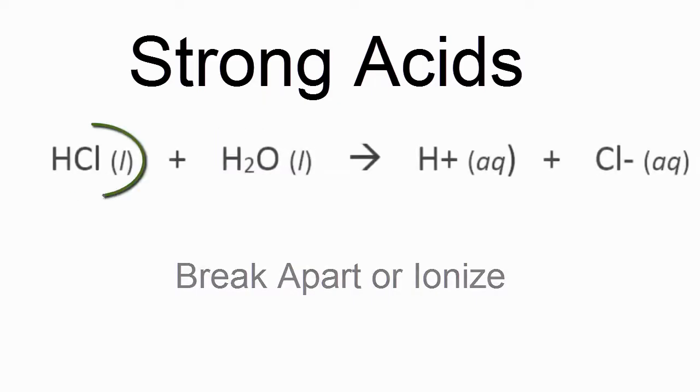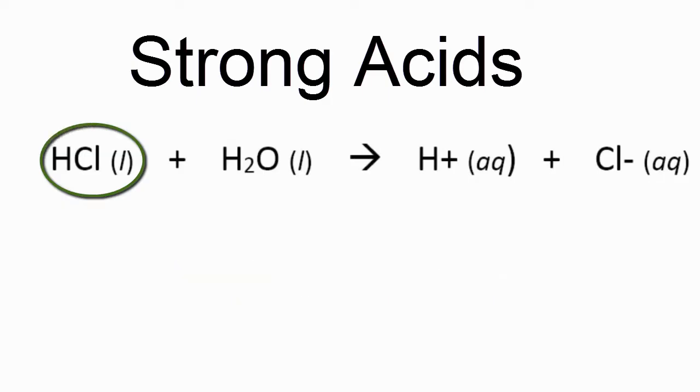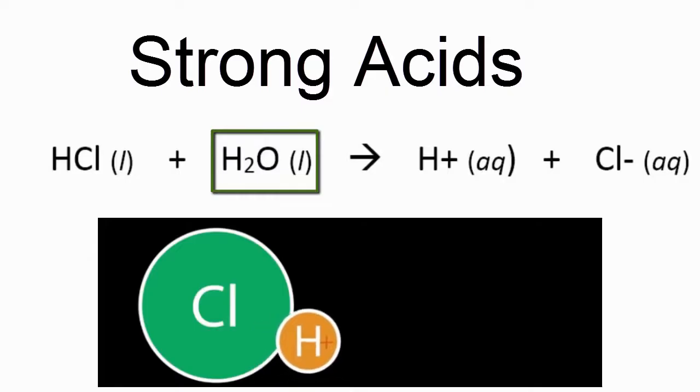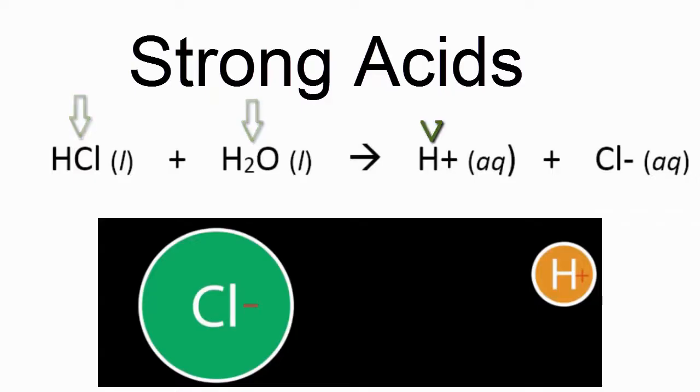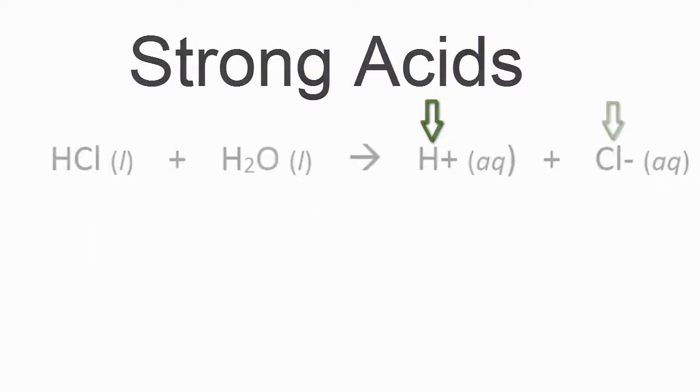So let's talk about HCl, hydrochloric acid, a very common strong acid. We put HCl in water, and it's going to dissociate completely. That means we have our liquid HCl, our strong acid, and our water. We put them together, and the H's and Cl's dissociate. They break apart into H plus and Cl minus, and they're dissolved in the water.